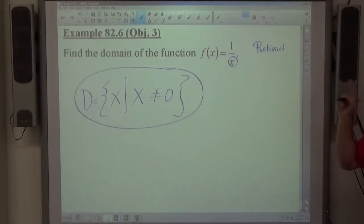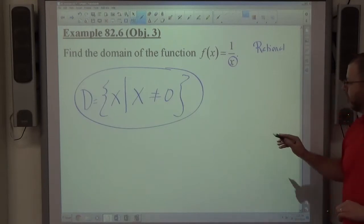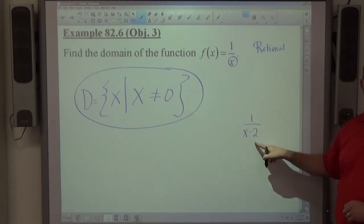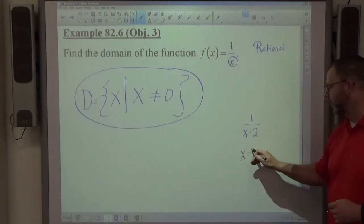One thing I've noticed people fall in the trap with these problems is they think 0 is always the number. But suppose it was 1 over x minus 2. If I pick 0 now, that's negative 1/2. That's allowed, right? But x does not equal 2 for that one.